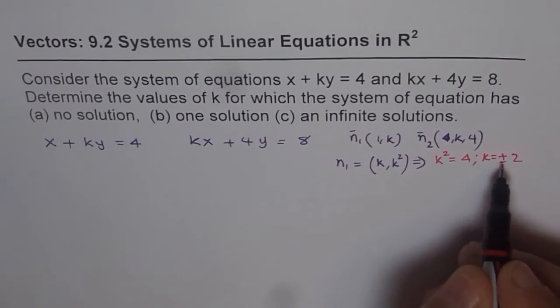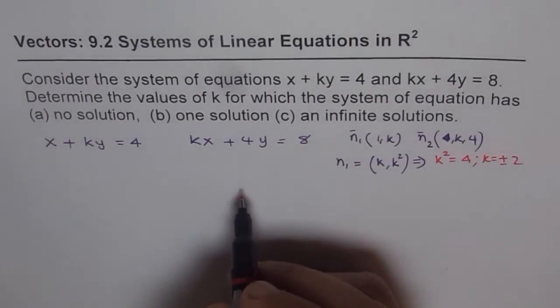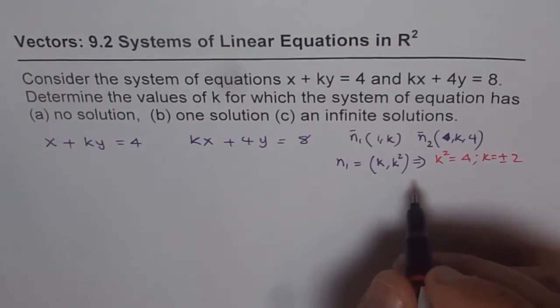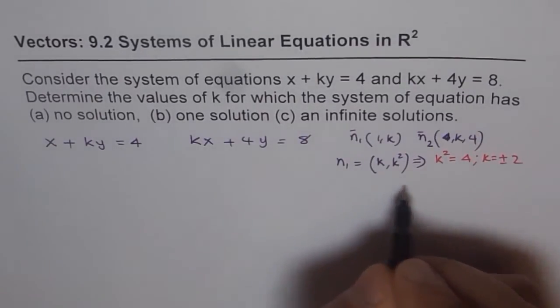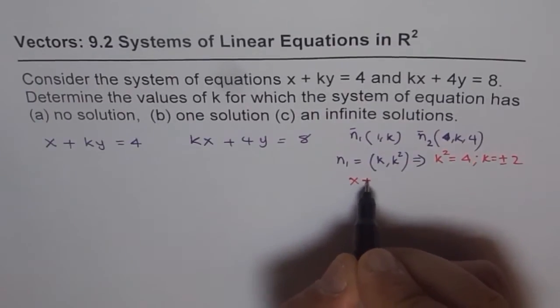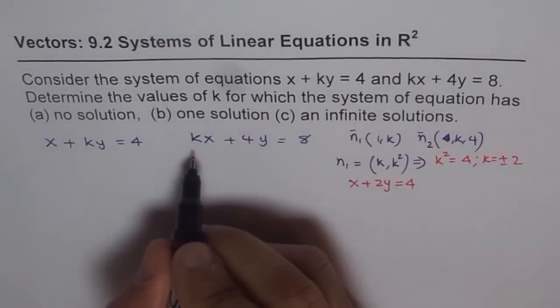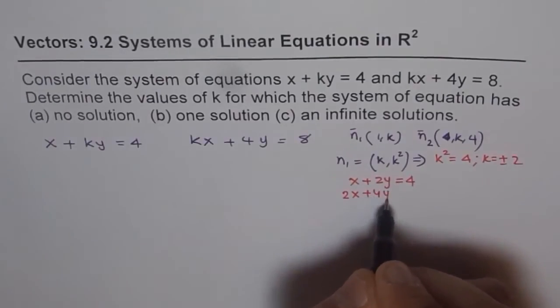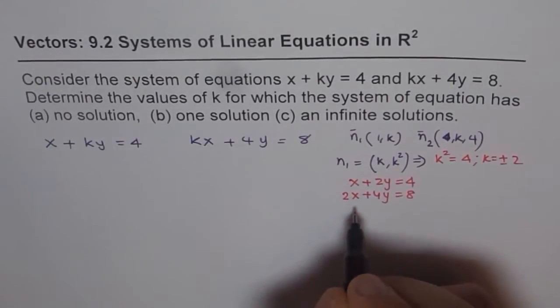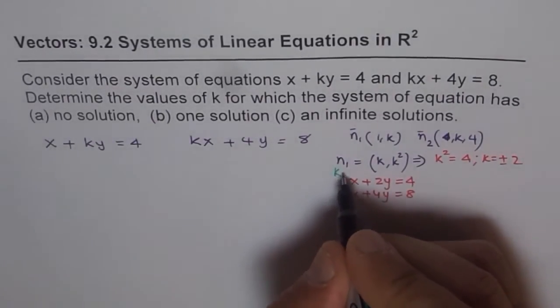Let me do it. So we'll write plus 2 and write one equation, and then minus 2, and write down the next equation. If I use plus 2 here for k, I get x + 2y = 4, that's the first equation. And plus 2 for this gives me 2x + 4y = 8. This is when we are using plus 2.